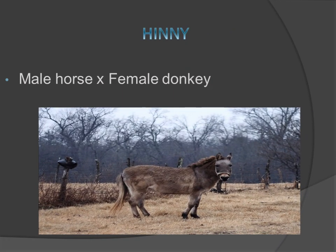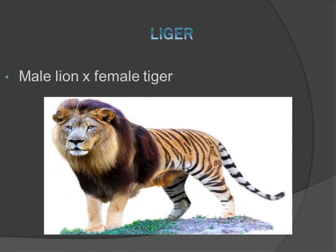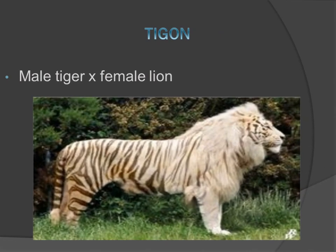Examples of sterile offspring: Hinny is produced by crossing a male horse with a female donkey. Mule is produced by crossing a male donkey with a female horse. Liger is produced by crossing a male lion with a female tiger. Tigon is produced by crossing a male tiger with a female lion. These are all examples of sterile offspring.